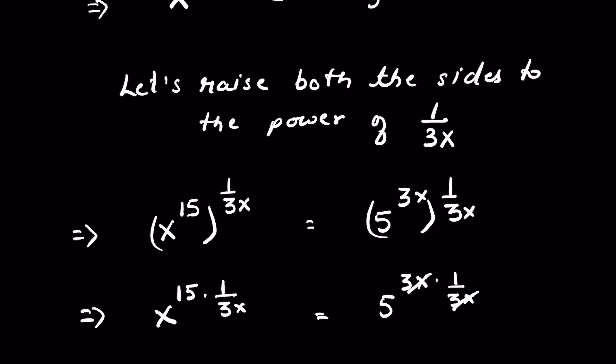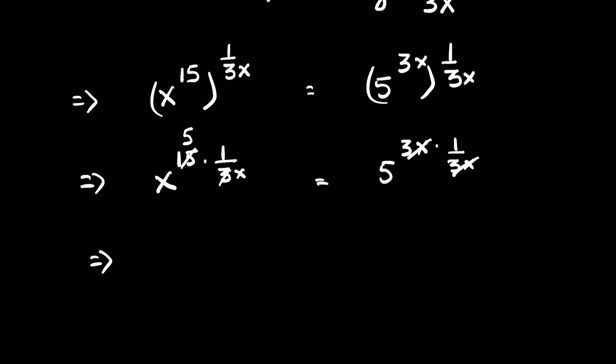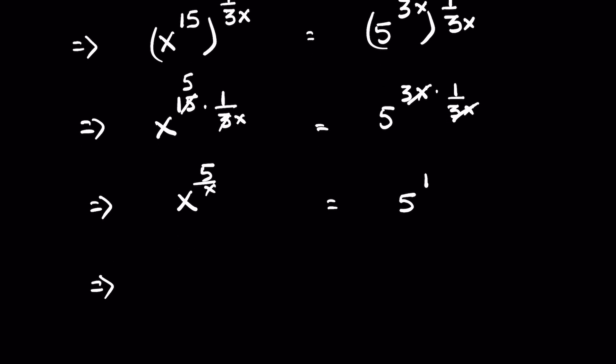So 3x and 3x get cancelled. Here 3 times 5 is 15. On this side we have x raised to the power 5 upon x, is equal to 5 raised to the power 1.